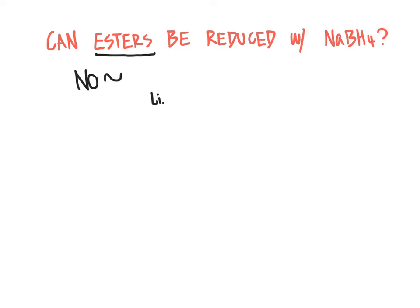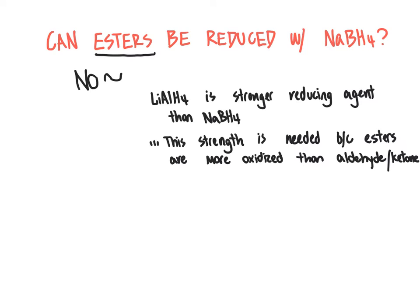One is that lithium aluminum hydride is a stronger, more reactive reducing agent than sodium borohydride. The fact that lithium aluminum hydride is a stronger reducing agent is necessary here because esters are more highly oxidized molecules than aldehydes or ketones. Due to the fact that they're more highly oxidized, that means they are harder to reduce. We need that strength in order to reduce an ester. Since the ester is highly oxidized, it's going to require the heavier artillery to get it reduced.